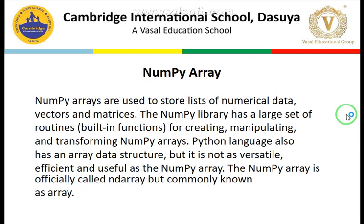Moving forward, about NumPy: NumPy arrays are used to store lists of numerical data. The NumPy library has a large set of routines — built-in functions for creating, manipulating, and transforming NumPy arrays. Today we will look at a few more functions on the NumPy array. A NumPy array is officially called ndarray, that is the n-dimensional array, but it is commonly known simply as array.